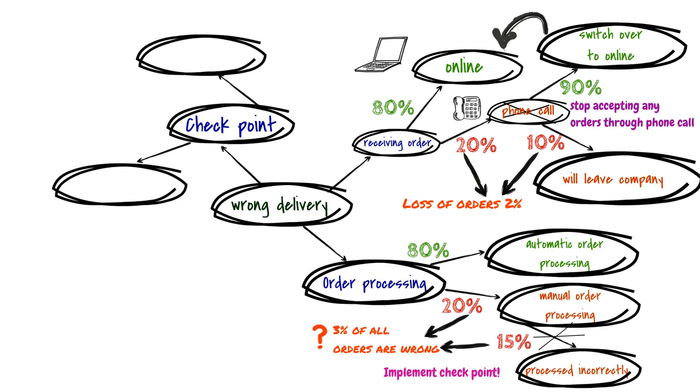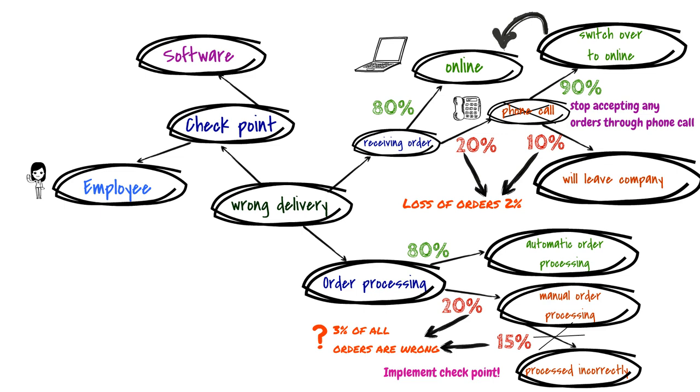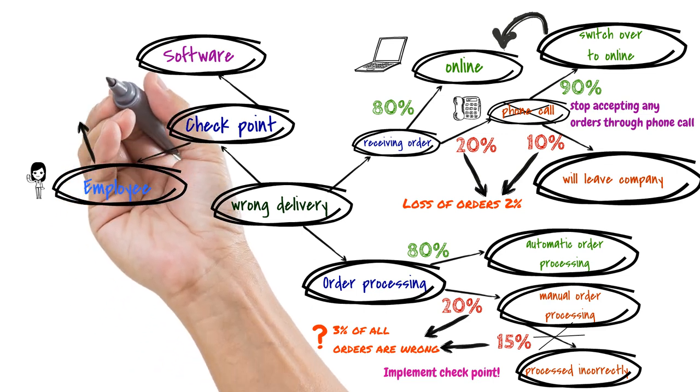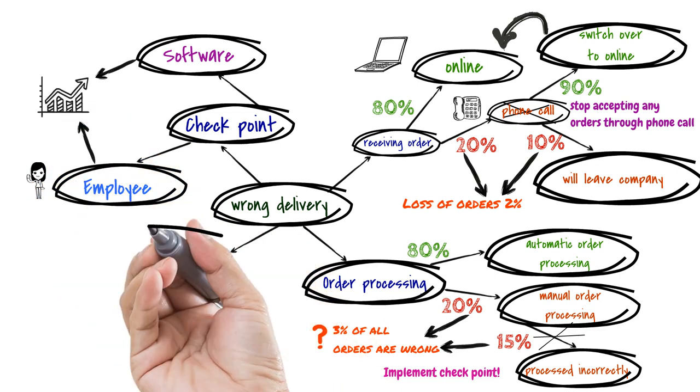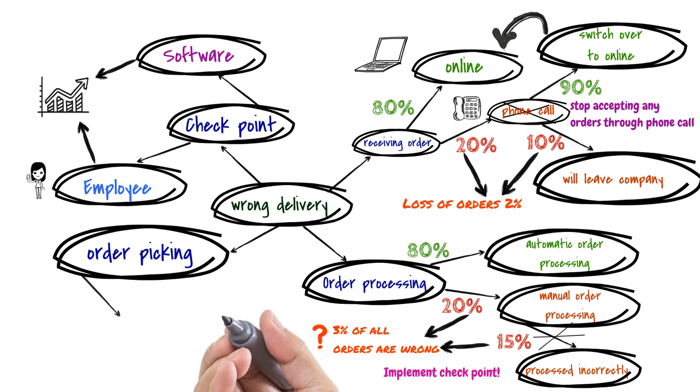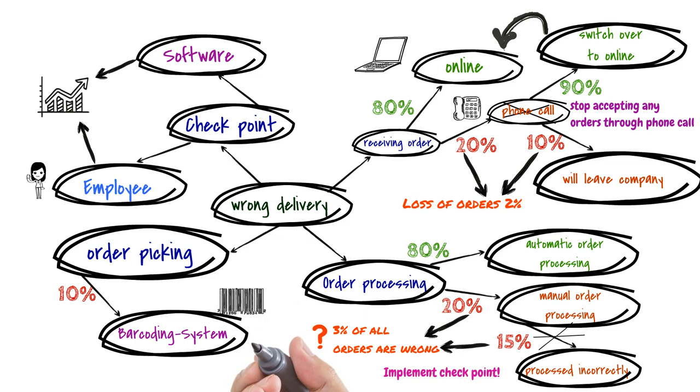We have two options. Either we implement the software that will sort out all wrong processed orders or we hire an additional employee to check all the manually processed orders. The best way to answer would be a cost-benefit analysis. The last connection to the main subject is picking the item from the warehouse. We found out that 10% of all orders were wrongfully picked. As a possible solution, we can use a barcoding system. That would prevent picking the wrong item. For this solution, a cost-benefit analysis would also be essential.